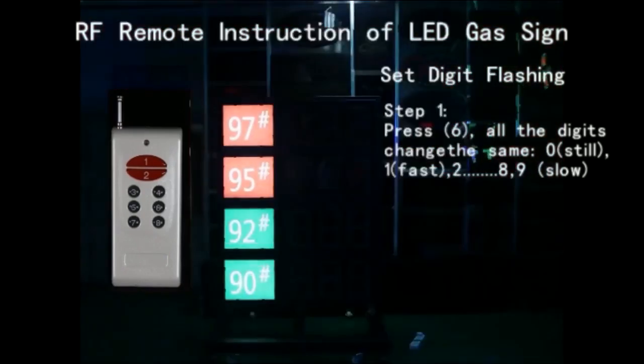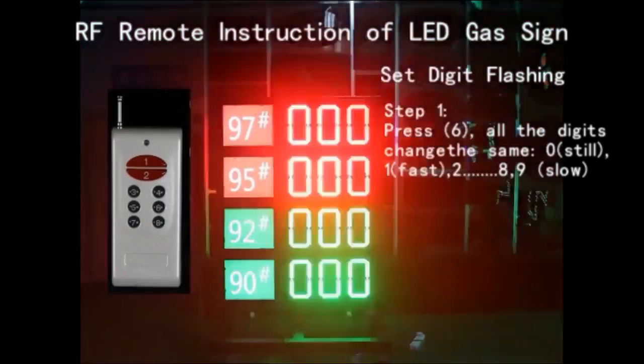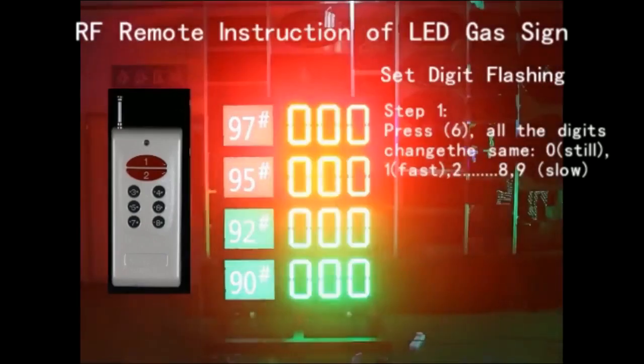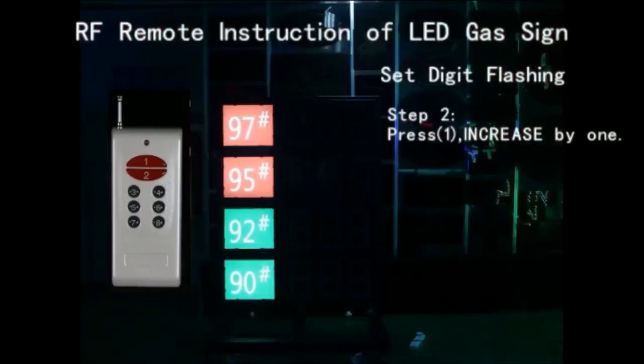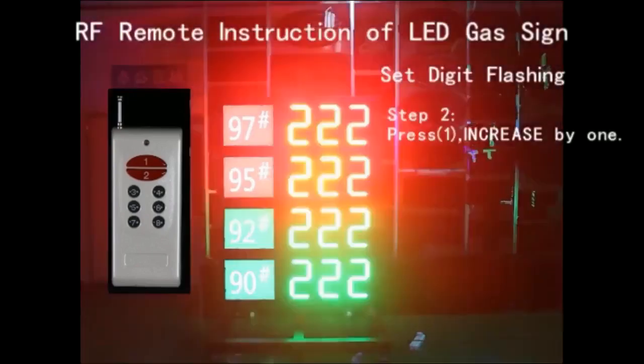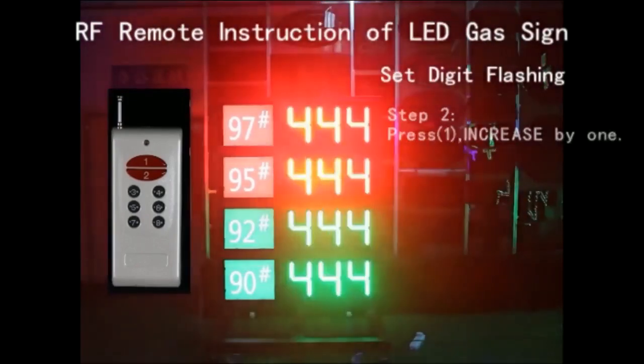1 is fast, 2 through 8, and 9 is the slowest. Step 2: Press button 1, the flash speed will increase by 1.